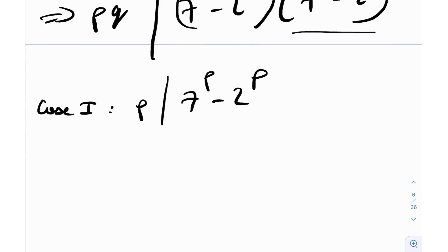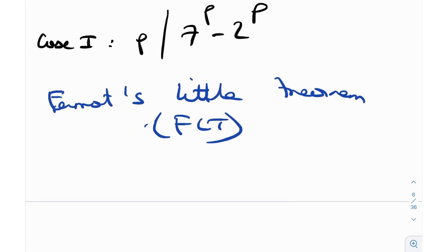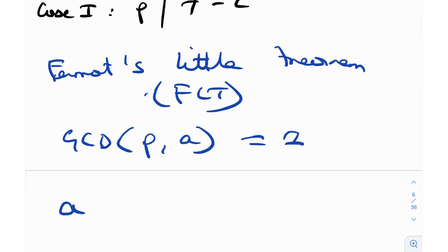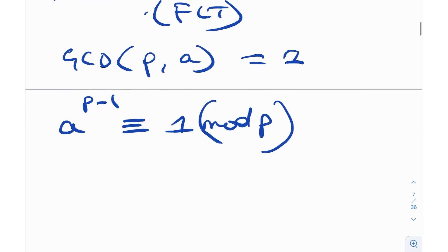Before jumping into the cases, let me discuss Fermat's Little Theorem — let's call it FLT. FLT states that for coprime integers p and a, where gcd(p, a) = 1, we have a^(p−1) ≡ 1 (mod p). This is extremely useful in elementary number theory problems. Equivalently, I can write a^p ≡ a (mod p).